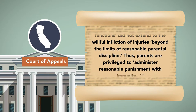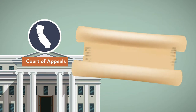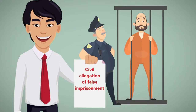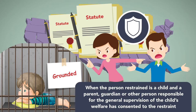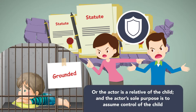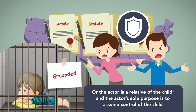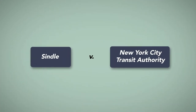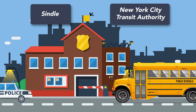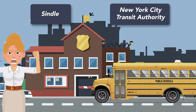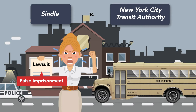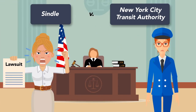Thus, parents are privileged to administer reasonable punishment with impunity. This same justification may be used to defend a civil allegation of false imprisonment. Several states have statutes that shield parties from false imprisonment liability when the person restrained is a child, and a parent, guardian, or other person responsible for the general supervision of the child's welfare has consented to the restraint, or the actor is a relative of the child and the actor's sole purpose is to assume control of the child. In Sindel v. New York City Transit Authority, a school bus driver took disruptive student passengers to the police department instead of their normal stops after their rambunctious behavior had created an unsafe environment on the bus. The plaintiff sued for false imprisonment, and the bus driver was found liable at trial. The appeals court reversed, based on the justification defense.